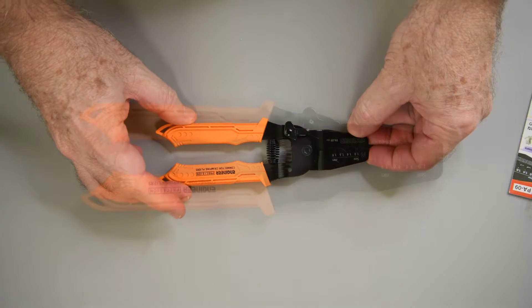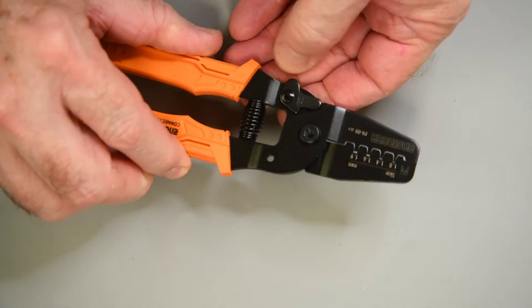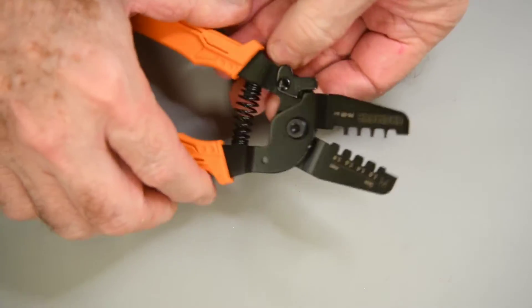But on the Engineer Inc. webpage, they have a crimp contacts chart. And lo and behold, the ClickMate terminal I'm using is listed as working with the PA09 tool. So I decided to give one a try.